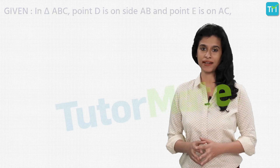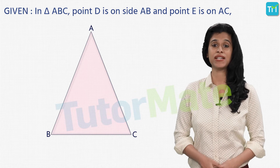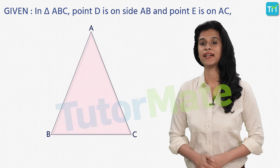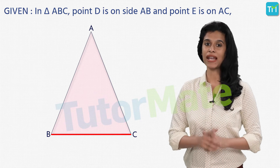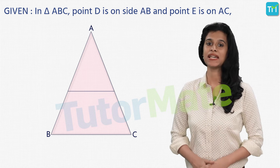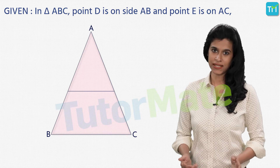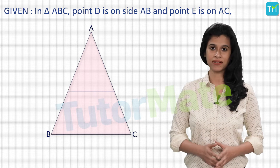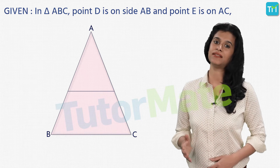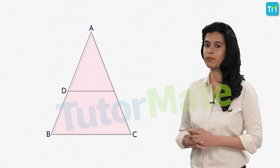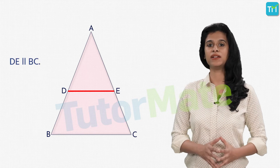Since it is a theorem based on triangles, our first step would be to draw a triangle ABC. Next, the statement reads that a line is drawn parallel to one side of the triangle. Let's say we choose this side as BC, and so we will draw a line that is parallel to BC. This line intersects the other two sides of the triangle — AB and AC. Let this line intersect AB at point D and AC at point E, so we have DE parallel to BC.